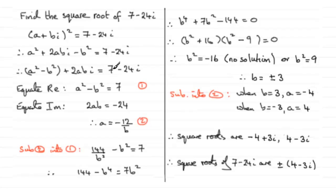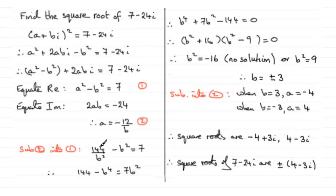Equating real parts: a squared minus b squared equals 7, call that equation 1. Equating imaginary parts: 2ab equals minus 24. Making a the subject gives a equals minus 24 over 2b, which simplifies to minus 12 over b. Substituting back into equation 1: a squared becomes 144 over b squared, so 144 over b squared minus b squared equals 7.